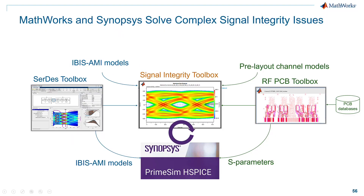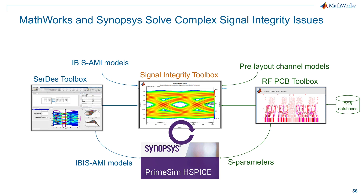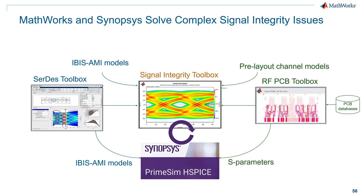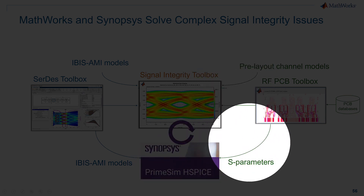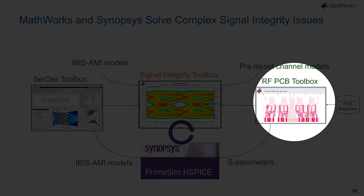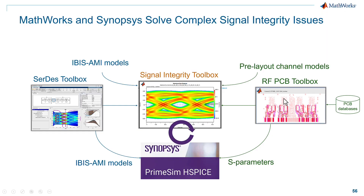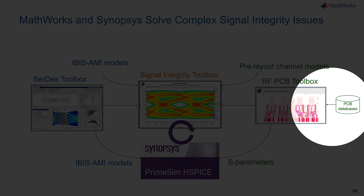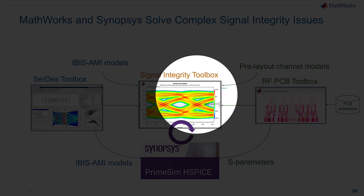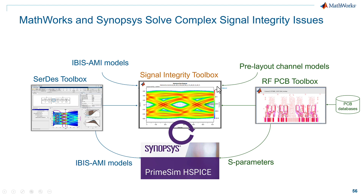We can also take IBIS-AMI models from a third party for modeling the transmitter, receiver, and equalization. In fact, most IBIS-AMI models in the industry today come directly from CERTES Toolbox. Beyond that, for modeling the channel, you can get S-parameters from different sources. The other product we offer for generating S-parameters is RFPCB Toolbox, which has high-fidelity electromagnetic modeling solvers. You can import printed circuit board databases or create structures and generate S-parameters to model your channel, or take pre-layout models and bring them directly into Signal Integrity Toolbox.